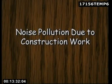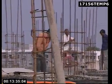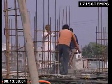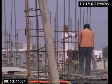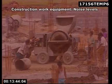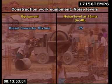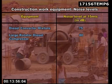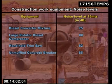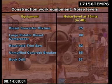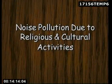Noise pollution due to construction work: civil engineering works for roads, bridges, and houses create sound of noise pollution level. Noise levels of some instruments used in construction work at a distance of 15 meters are: Diesel Converter Mixer 75 dB; Large Rotary Diesel Compressor 80 dB; Handheld Tree Saw 82 dB; Unmuffled Concrete Breaker 85 dB; Rock Drill 87 dB; Tractor Scraper 93 dB.